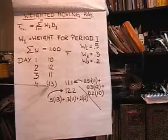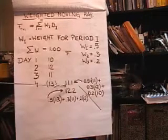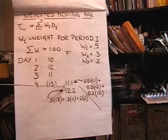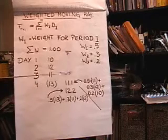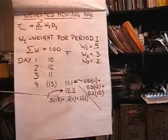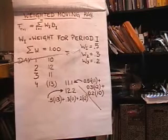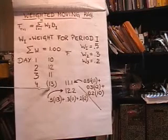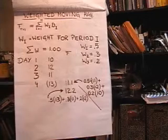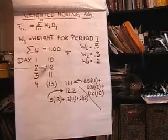Day 4 comes and goes, and we actually sell 13. We under-predicted still, but our forecast error is now 1.9 instead of 2. For the next period, the forecast is 0.5 times 13 plus 0.3 times 11 plus 0.2 times 12.